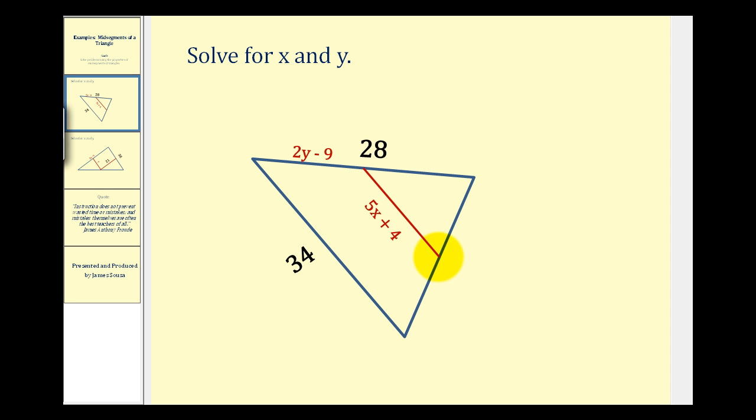We're given that this red segment is a mid-segment of the triangle. Remember that means that it joins the mid-points of two adjacent sides. So this point right here would be the mid-point of this side of the triangle, which tells us that this segment here is congruent to this segment here. So if the total length of this side is twenty-eight units, each of these smaller segments must be half that length, or fourteen units.